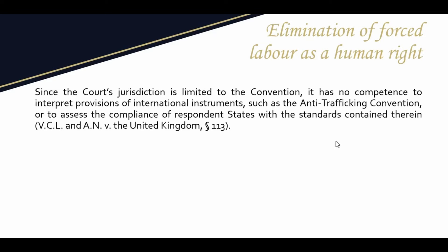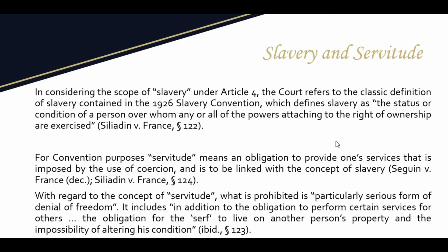Since the court's jurisdiction is limited to the convention, it has no competence to interpret provisions of international instruments such as the anti-trafficking convention, or to assess the compliance of respondent states with the standards contained therein. Regarding the notions of slavery and servitude: in considering the scope of slavery, the court refers to the classic definition contained in the 1926 Slavery Convention, which defines slavery as the status or condition of a person over whom any or all of the powers attaching to the right of ownership are exercised.